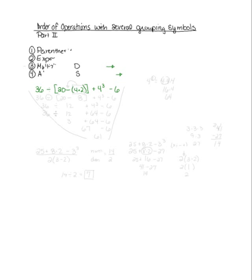When looking at this problem, you'll notice that there are two sets of grouping symbols. You treat the innermost parentheses first — so when you have more than one set of parentheses, you must do the innermost first. Looking at the parentheses, I have twenty minus four times two, and inside the innermost parentheses I have four times two, which I do first. That gives me an eight.